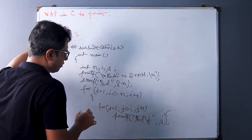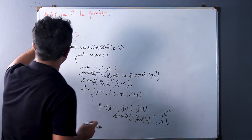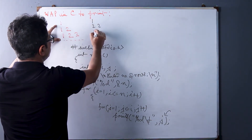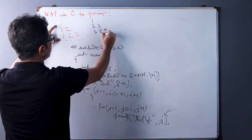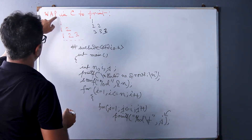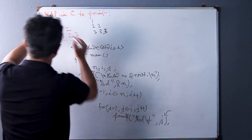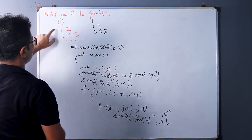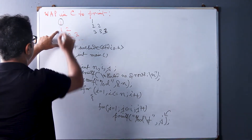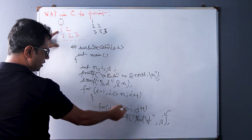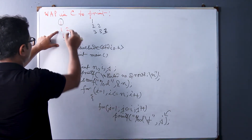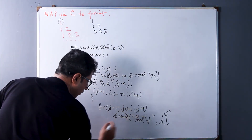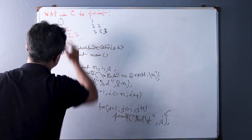We are going to print j — and in the previous program we printed i. This is the only change from the previous program. Where we printed i we got the sequence 1, 2 2, 3 3 3. In this program we print the j values, so in the first line 1 prints, and in the second line 1 and 2 print, as j changes in the inner loop.